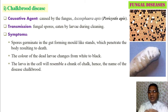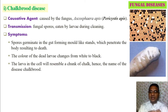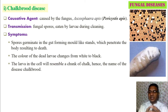The fungal spores form mold-like strands, increase in population, and penetrate the body, causing death. They also block the alimentary canal. The color of dead larvae changes from white to black. The larvae in the cell resemble a chunk of chalk — the infected larvae are somewhat whitish with black spots and look like a small piece of chalk, hence the name chalk brood.